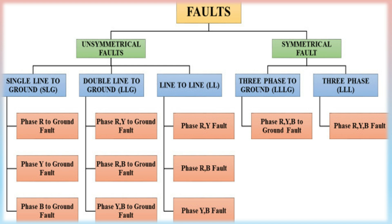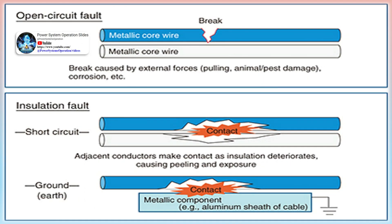Ground faults occur when a conductor in the power system comes into contact with the ground or a grounded object, resulting in a flow of current to the ground, which can cause equipment damage, insulation breakdown, and electric shock hazards to personnel. Insulation faults occur when the insulation between two conductors breaks down, resulting in an open circuit, due to over-voltage conditions, insulation aging, or mechanical damage.